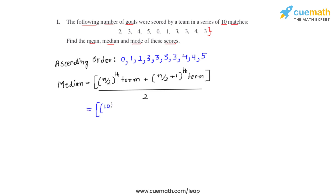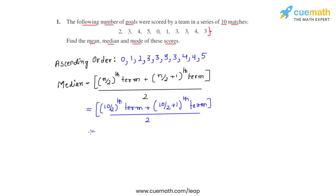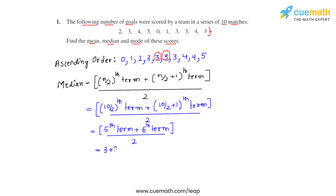We substitute and write the (n/2)th term plus the (n/2 + 1)th term, divided by 2. This gives us the 5th term plus the 6th term divided by 2. From the arranged data, the values of the 5th and 6th terms are both 3, so we write 3 plus 3 divided by 2, which equals 3. So the median for the given set of scores is 3.